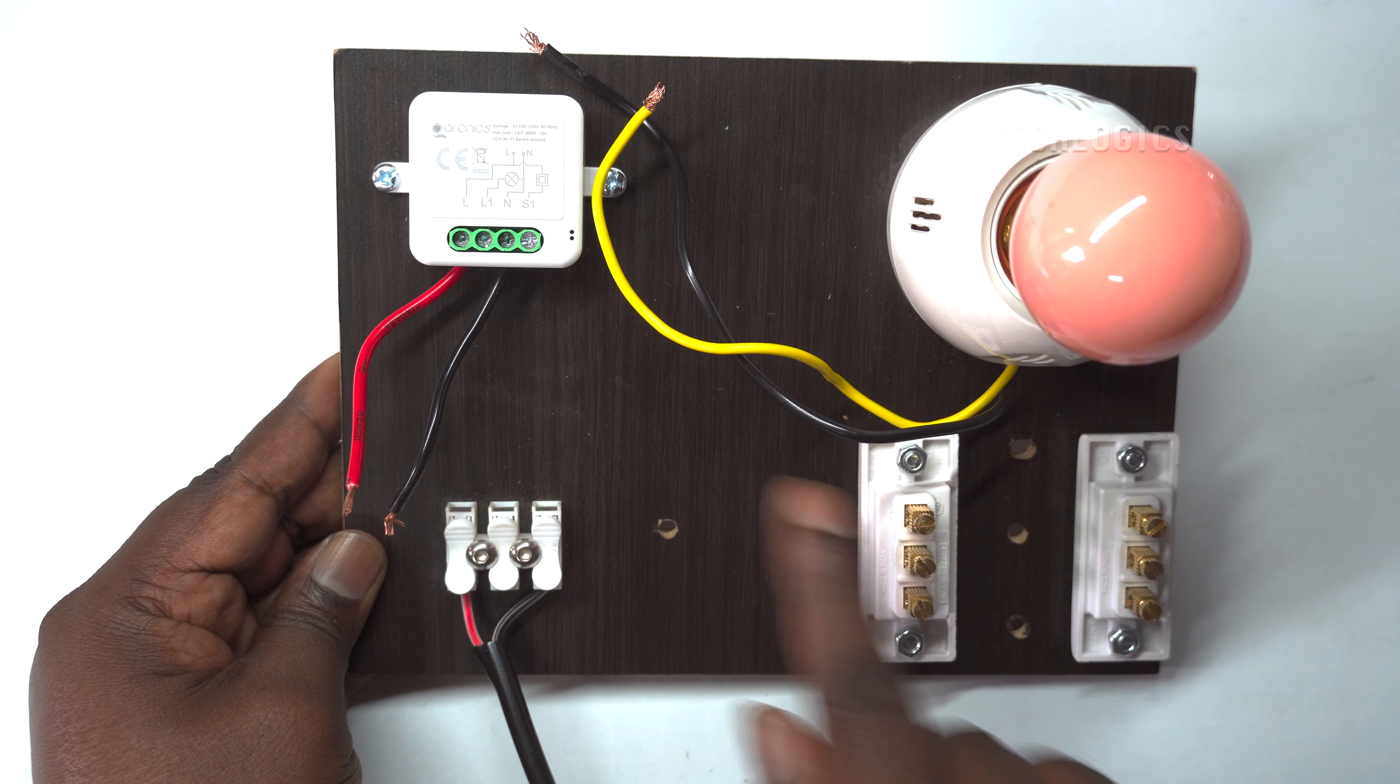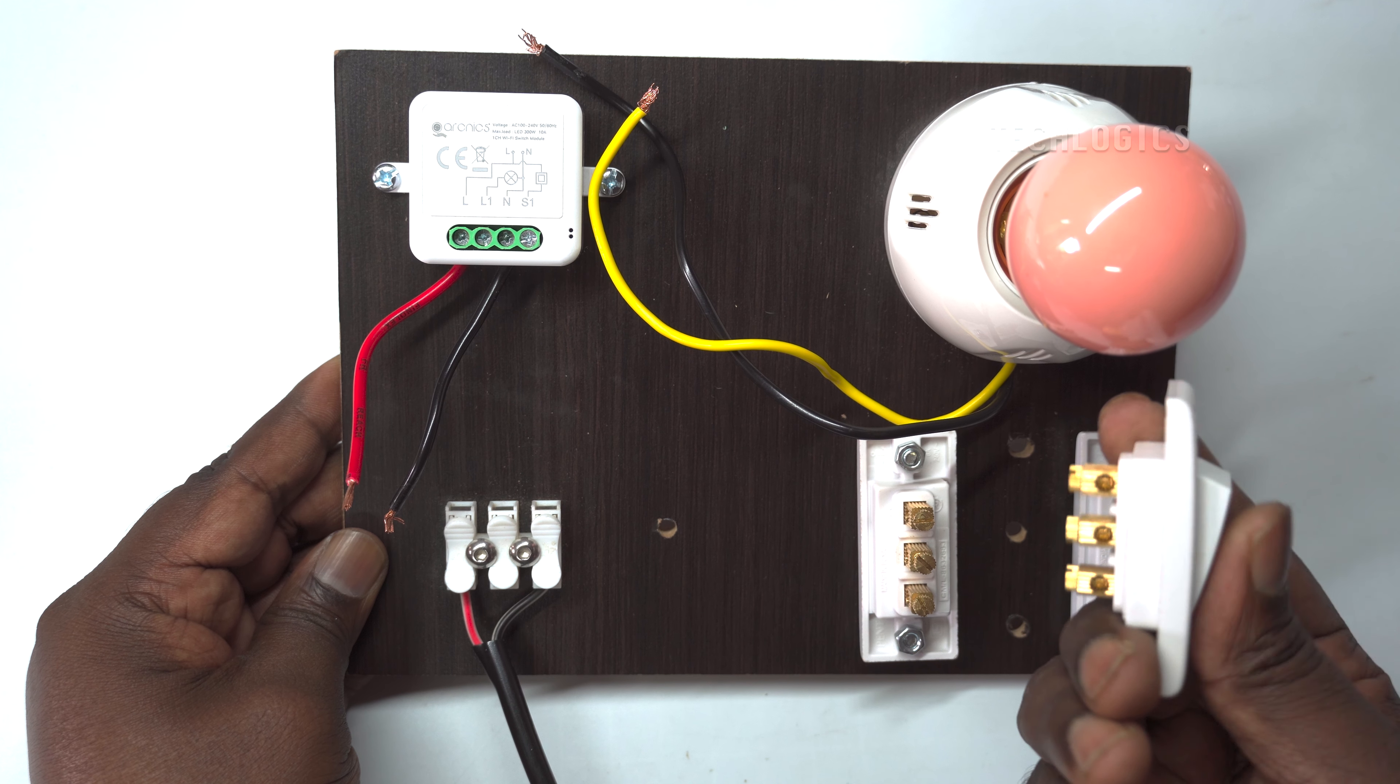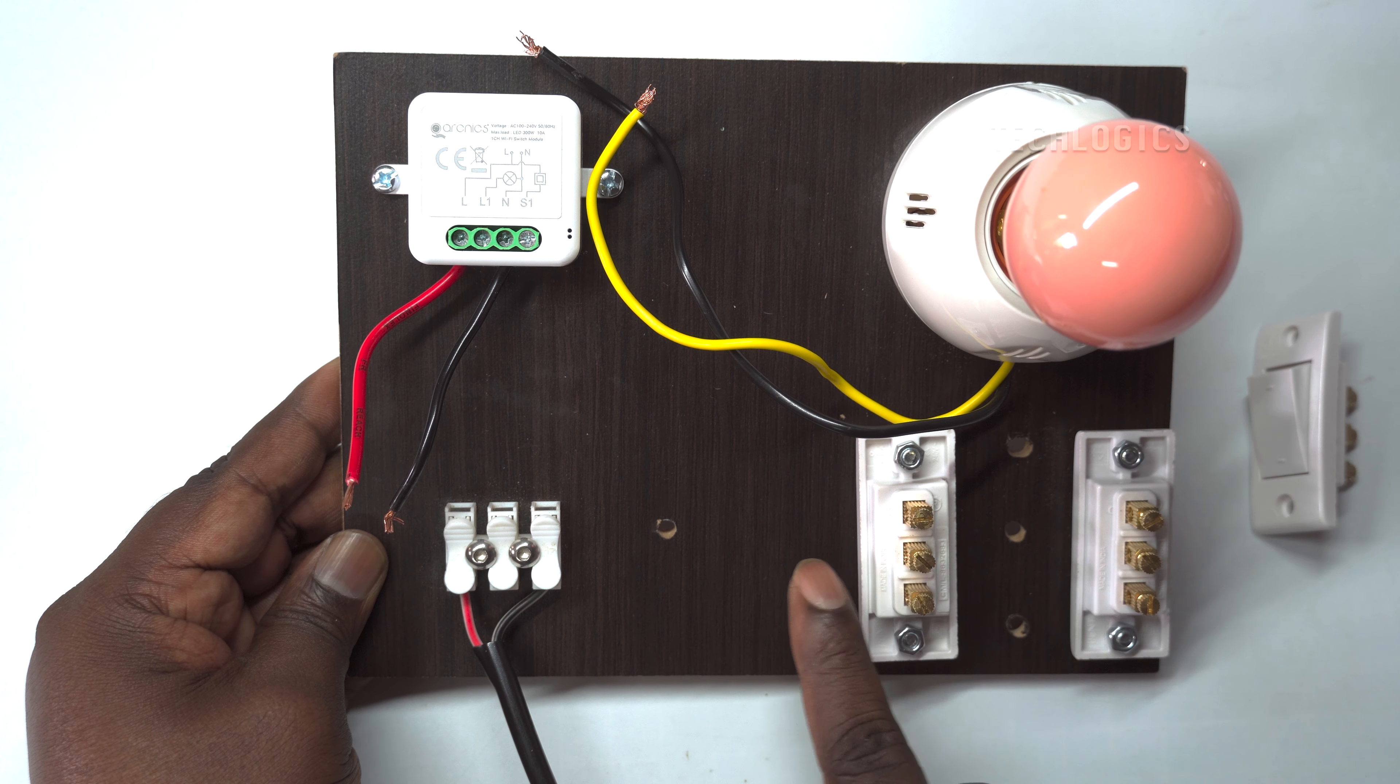Let's start with the 2 Yaw Smart Switch. Here, we are using a 1-channel smart switch and two two-way switches. Each switch has three terminals: common (COM), L1, and L2.